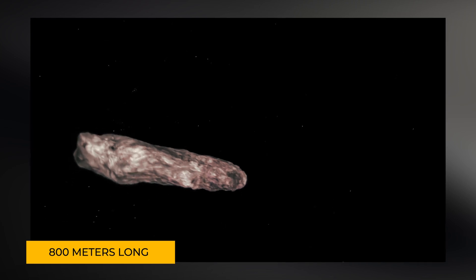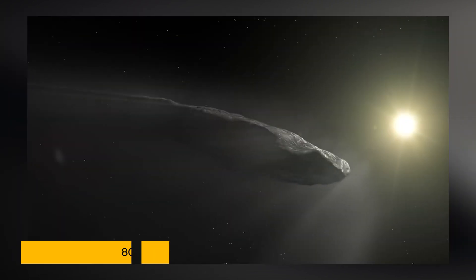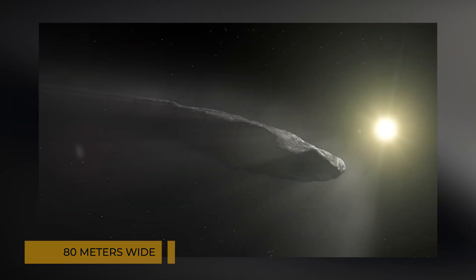Initially, astronomers pegged Oumuamua as a stony asteroid, but its bizarre shape, stretching 800 meters long but only 80 meters wide, didn't match any known asteroid or comet in our solar system.